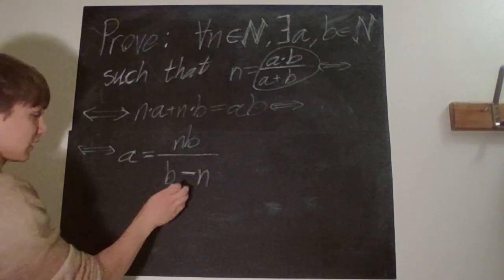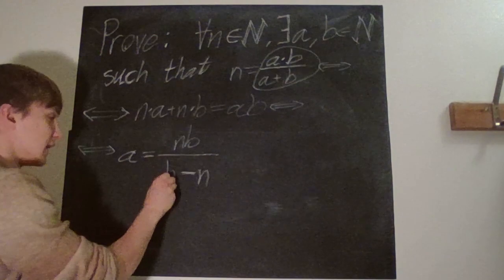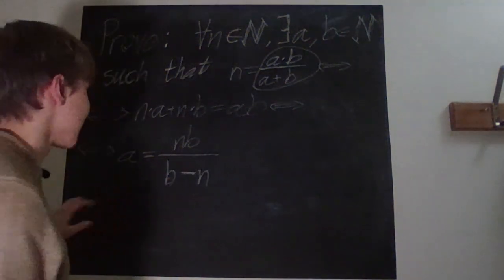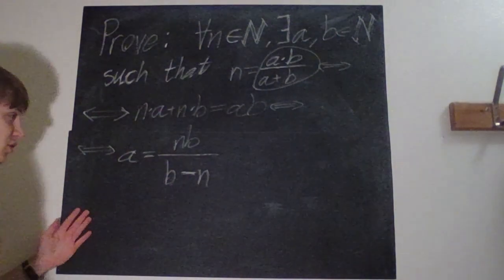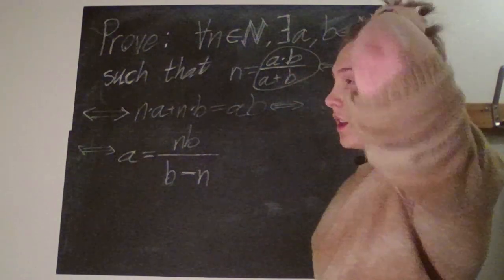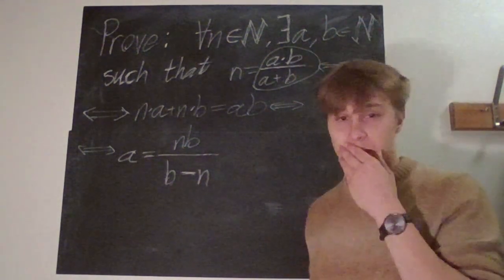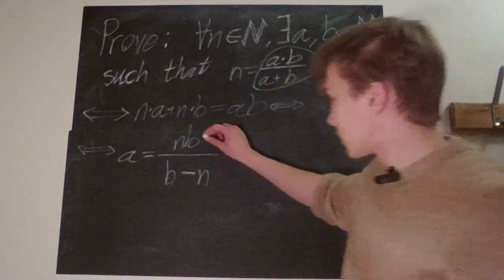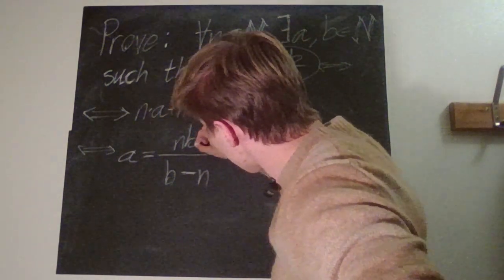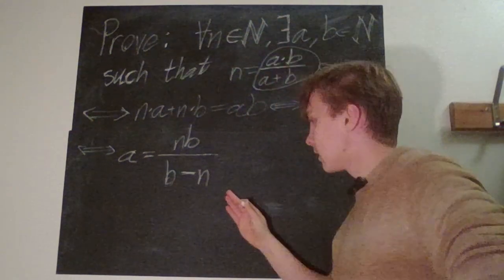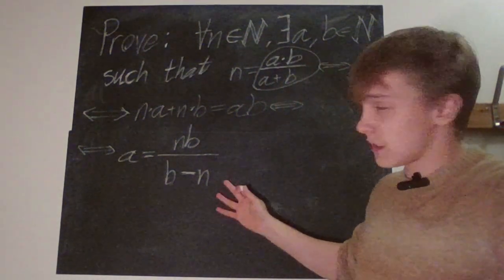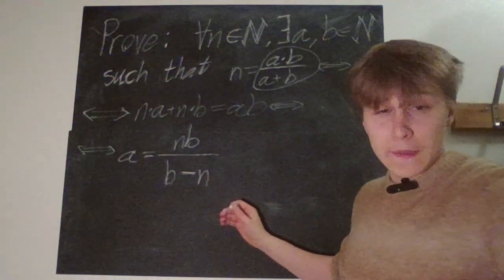So this is completely equivalent as long as this thing isn't zero, but since we're choosing our b and n's, this is not really relevant at all. So when we have this thing, now we want to say: choose b in some way with respect to n that this thing is always an integer.